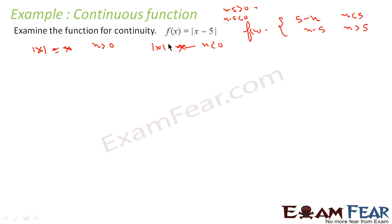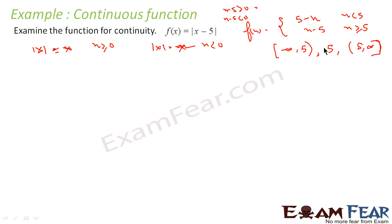We can see that for x ≥ 0 we use x - 5, so 0 can be included on either side. Now for this function, I can divide the whole domain into: (-∞, 5) excluding 5, the point {5}, and (5, ∞) excluding 5. These are the three intervals, because from the equation we can see that 5 may be a point of contention. We don't know whether the function is continuous at 5 or not — just because we have two equations and the equation changes at x = 5, the function may be discontinuous there. So we have to find out.